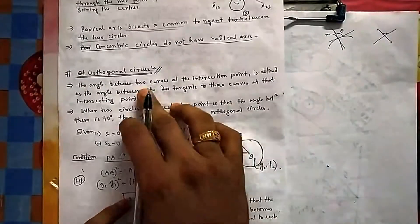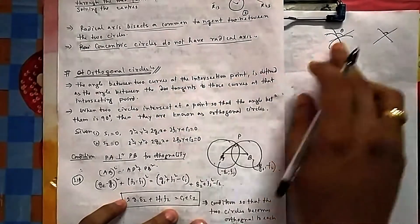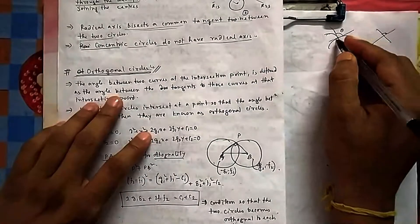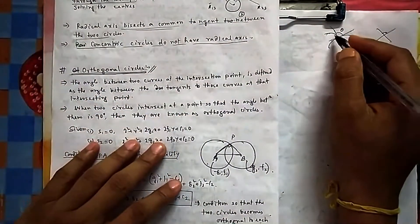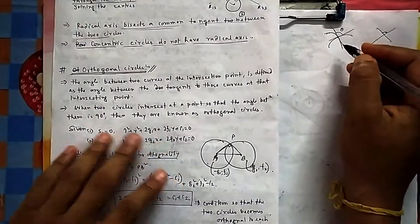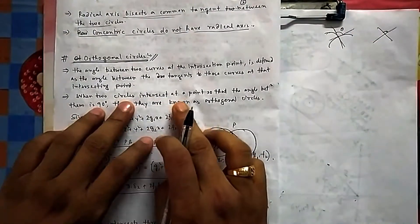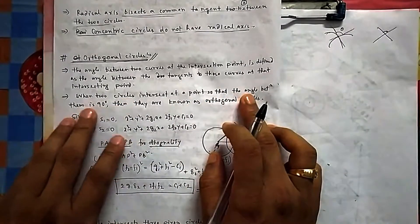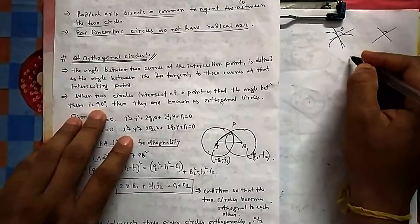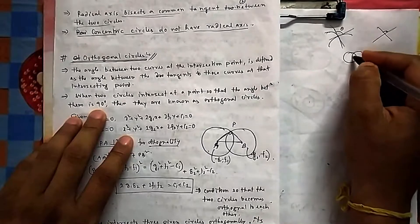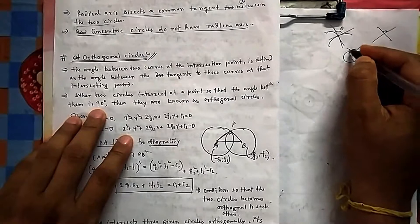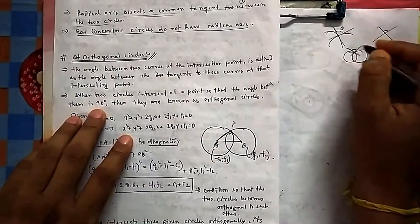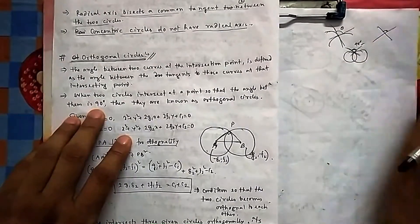The same applies for circles. The angle between two curves at the intersection point is defined as the angle between the tangents to those curves at that intersecting point. When two circles intersect such that the angle between their tangents drawn at the intersecting point is 90 degrees, we say those two circles are orthogonal to each other.